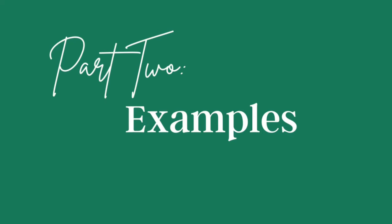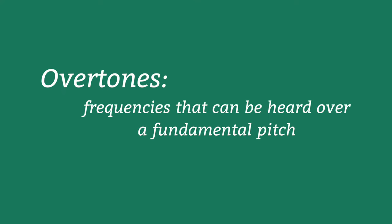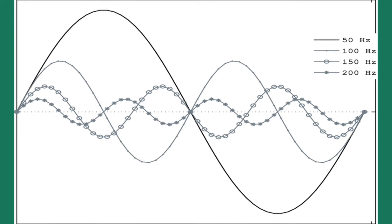Overtones are frequencies, or pitches, that ring out over the fundamental pitch played. They're also known as harmonics. This is caused by smaller vibrations in addition to the fundamental vibration.